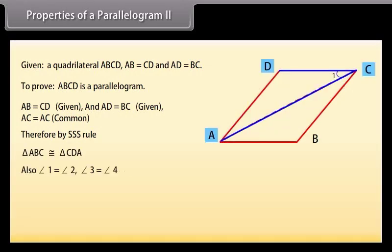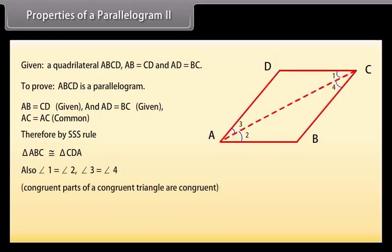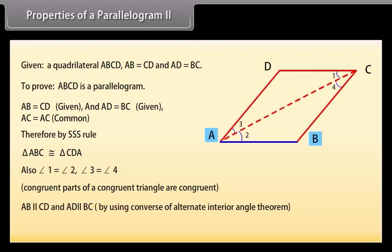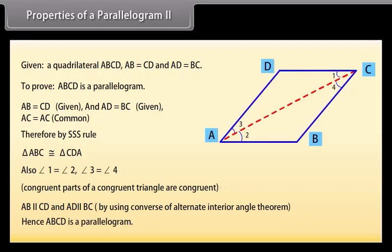Also, angle 1 = angle 2 and angle 3 = angle 4, because congruent parts of congruent triangles are congruent. Therefore, AB is parallel to CD and AD is parallel to BC. Hence, ABCD is a parallelogram.